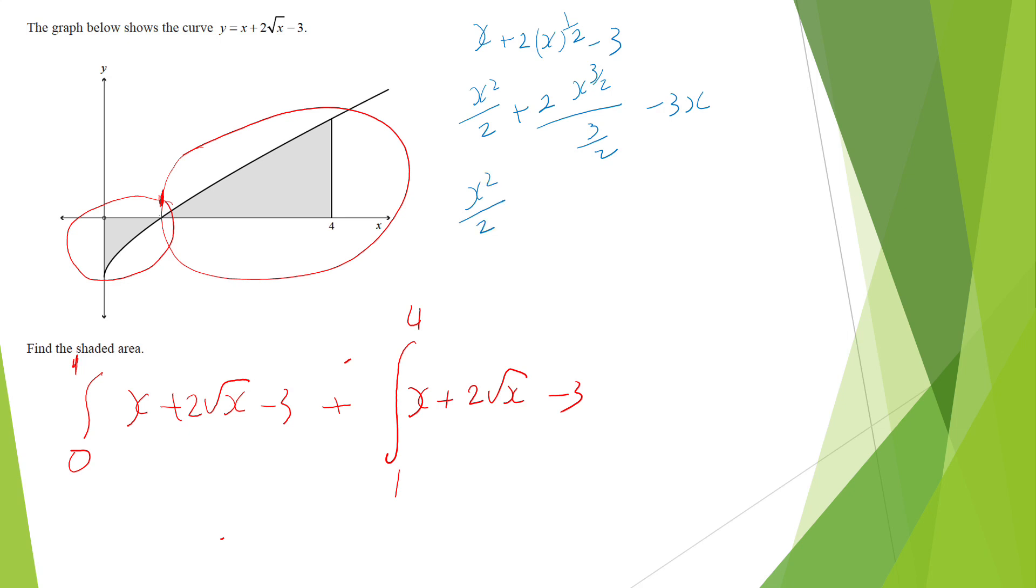So flipping that around, I'll have 4 x to the 3 over 2, over 3, minus 3x. So done the integration.